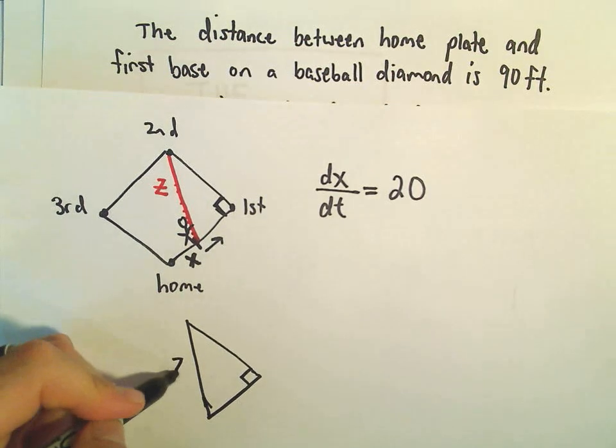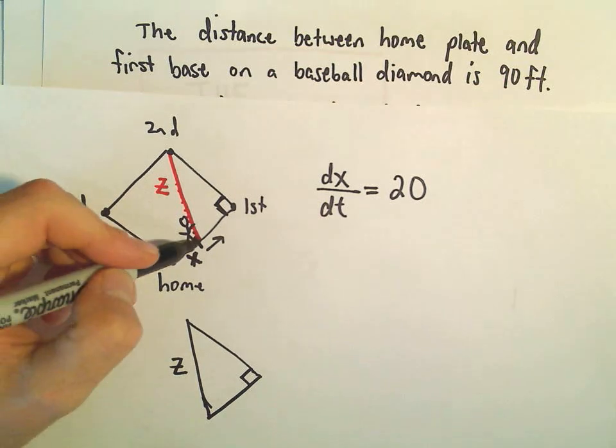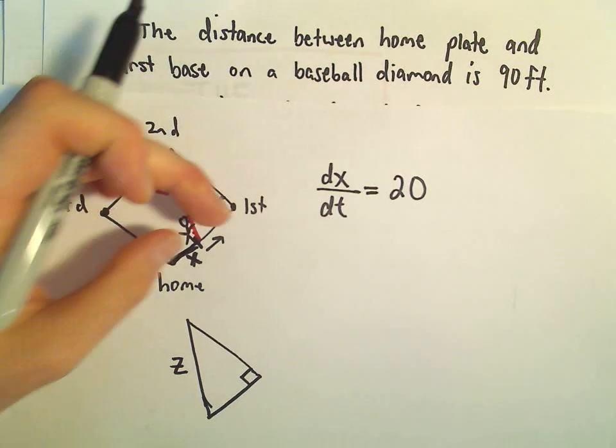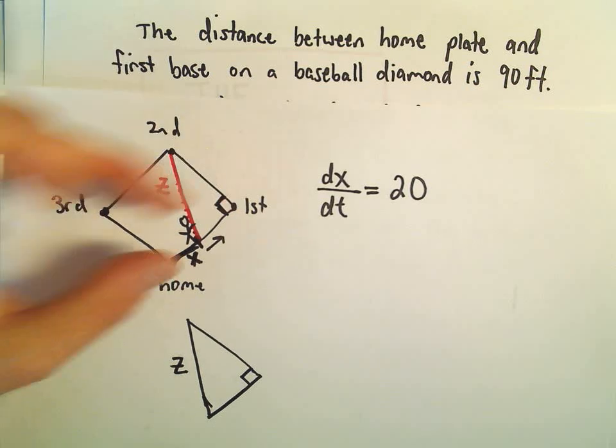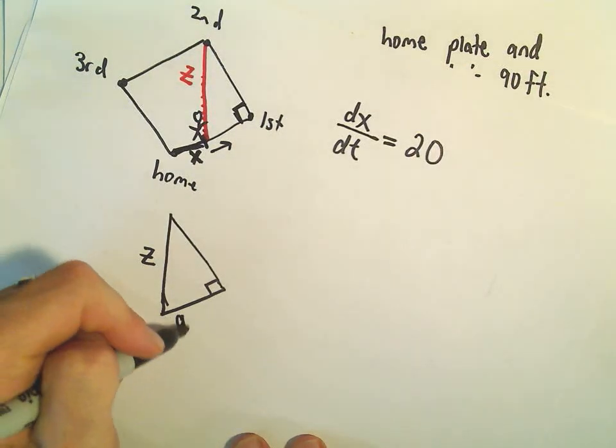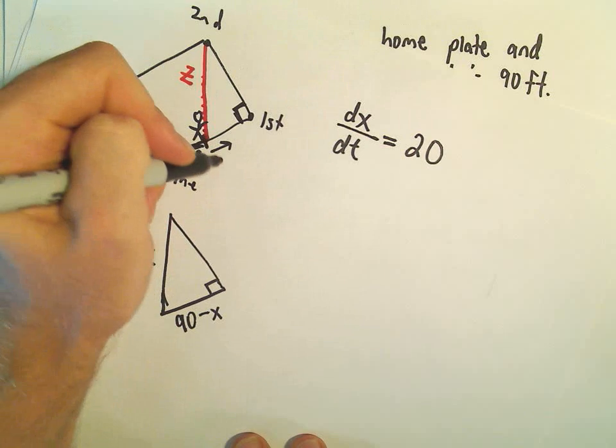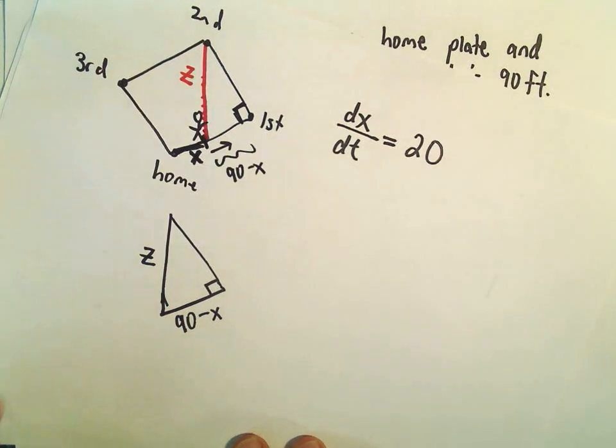Okay, so we're labeling this length as z. He's already run x units this way. So if you think about it, since the total length is 90 feet, that means the remaining distance would be 90 minus x. It's going to be whatever's left over.